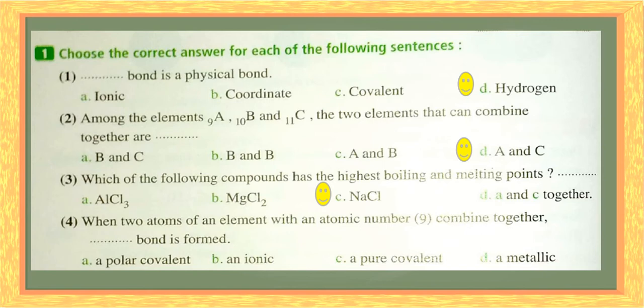Question four: when two atoms of an element with atomic number nine combine together — atomic number nine means seven electrons in the outer energy level or valence shell. They will form a single covalent bond. Since there is no difference in electronegativity as it is the same element, it will be a pure covalent bond.